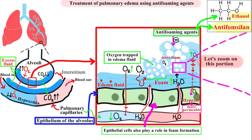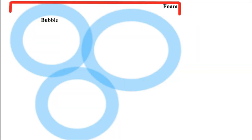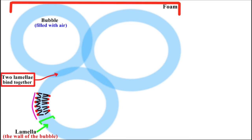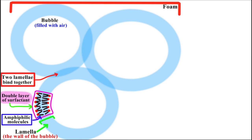Let's zoom on this portion of the foam in our alveolus. The foam consists of a lot of bubbles — I will show just three of them. A bubble is just a globule of air in a liquid. Each bubble is enclosed by a thin film or membrane called a lamella — the wall of the bubble. These lamellae are able to bind with each other, thus forming the foam. A lamella consists of a double layer of surfactant. I will draw just a couple of those amphiphilic molecules, but keep in mind that they are everywhere.